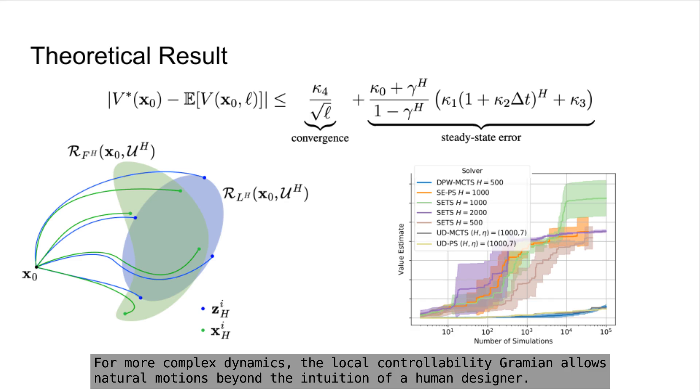For more complex dynamics, the local controllability Gramian allows natural motions beyond the intuition of a human designer.